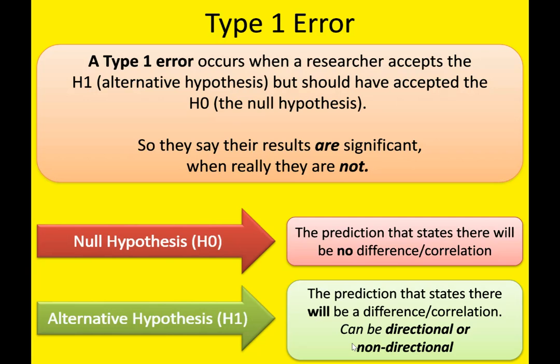The alternative hypothesis can either be directional or non-directional. It depends whether you've had previous research, in which case you choose a directional hypothesis, or no previous research, in which case you choose a non-directional.